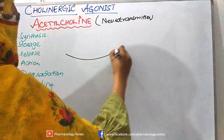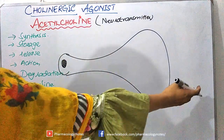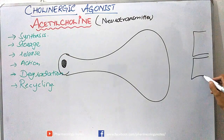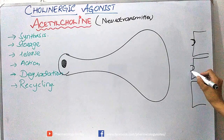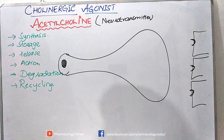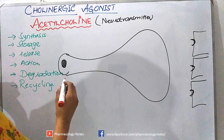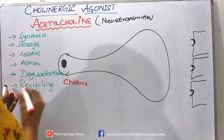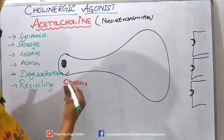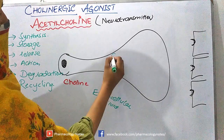We move towards a neuron — the cell body of a neuron — and this is a nerve ending, and next to it is the synaptic cleft. Next to it are effectors present which have receptors for this acetylcholine. Now, from where does it all start? There is something called choline.